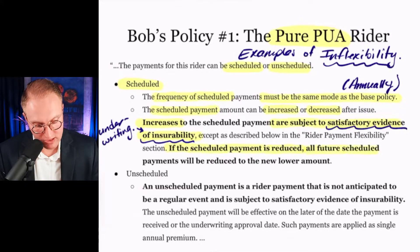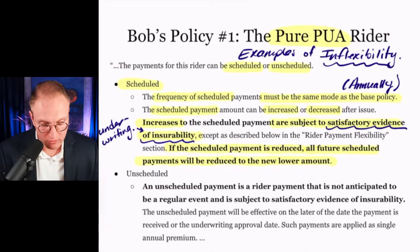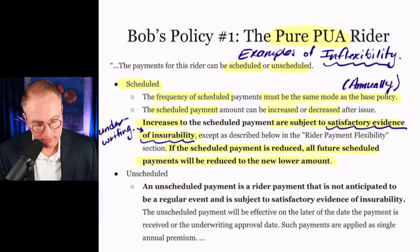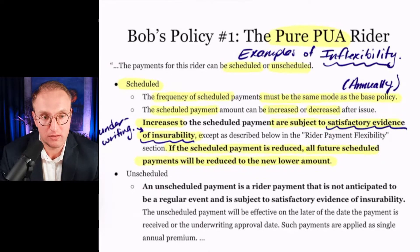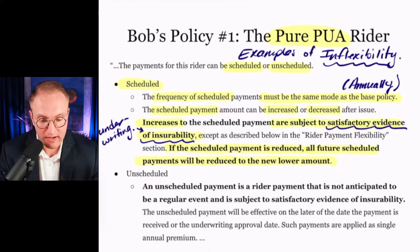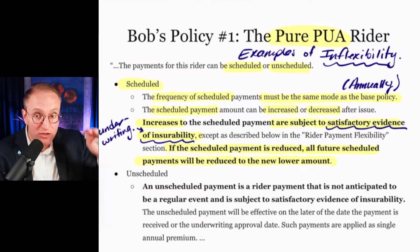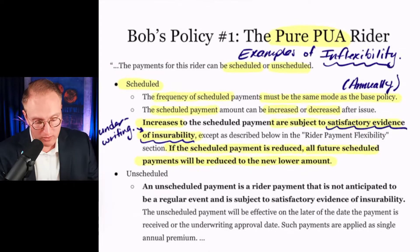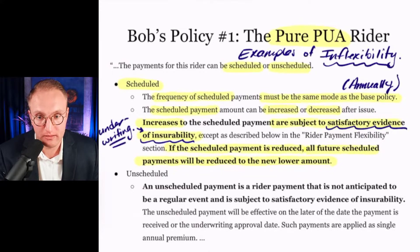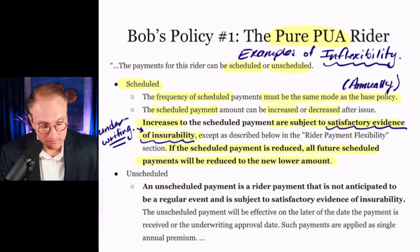Increases to any scheduled payments are subject to evidence of insurability, except as described in the flexibility section. Now, if the scheduled payment is reduced, then all future scheduled payments will be reduced to the new lower amount as well. So: $40,000 in total premium — I'm paying a big amount to PUA. If I reduce that PUA because I have an income disruption and don't have the money available, well then my scheduled PUA in all future years is also reduced. And if in a future year I want to increase the scheduled PUA back up to what it was, I need approval from the company — because increases to the scheduled payment are subject to satisfactory evidence of insurability.